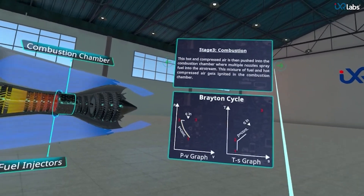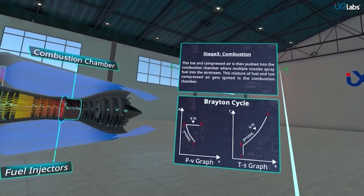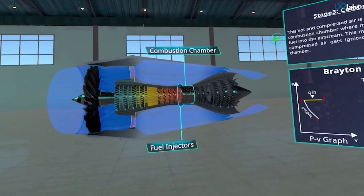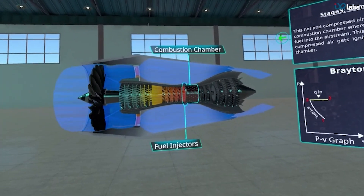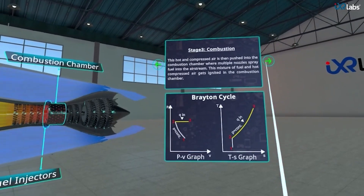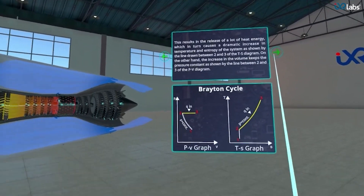The third stage is combustion, where fuel is added to the hot and compressed air and as a result it gets ignited. This releases a large amount of heat energy.